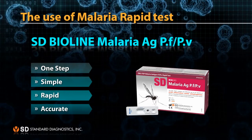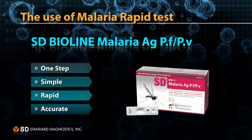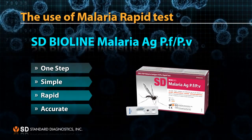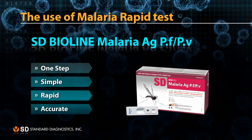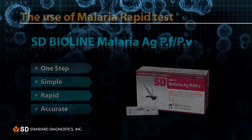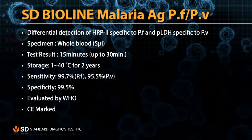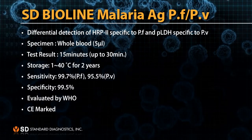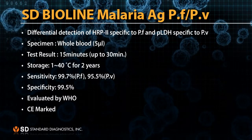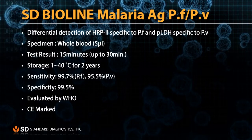Malaria rapid diagnostic tests assist in the diagnosis of malaria by detecting evidence of malaria parasites in human blood. SD Malaria Antigen PF-PV rapid test is a one-step, simple, rapid, accurate test. The SD BioLine Malaria Antigen PF-PV rapid test is for differential detection of HRP2 specific to Plasmodium falciparum and PLDH specific to Plasmodium vivax.